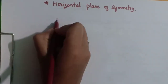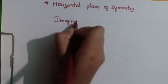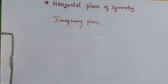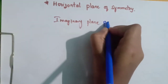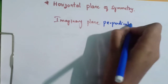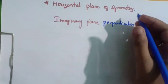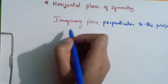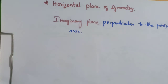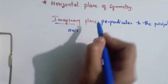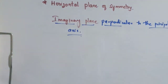Now let's define the horizontal plane of symmetry, sigma_h. It is the imaginary plane that is perpendicular to the principal axis. This is the key difference from sigma_v, which is parallel to the principal axis — sigma_h is perpendicular to the principal axis.